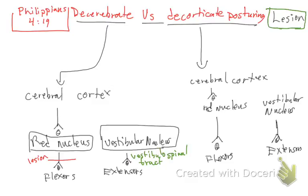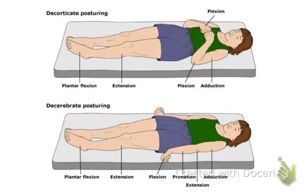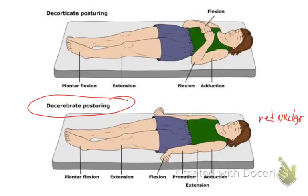The position of this patient is called decerebrate. When you have a lesion between the red nucleus and the flexors, the patient cannot flex their extremities — for example, the upper limbs. So the patient is going to be in an extended position all the time. I'll show you a picture: this patient here is in the decerebrate position. The lesion is between the red nucleus and the flexors, so they cannot flex — they are extended.